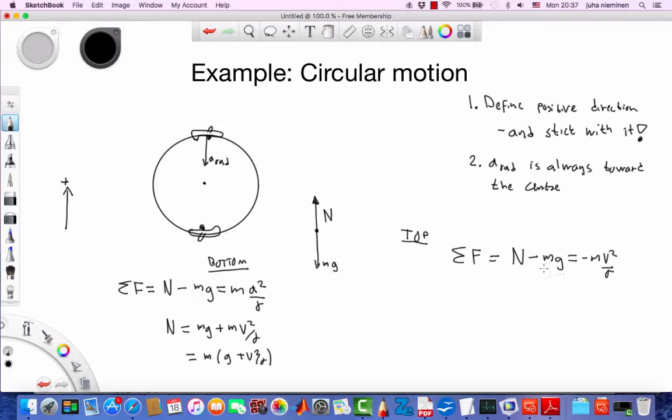Like this. Now, when we solve for n, we get mg minus mv squared over r, or m times g minus v squared over r.